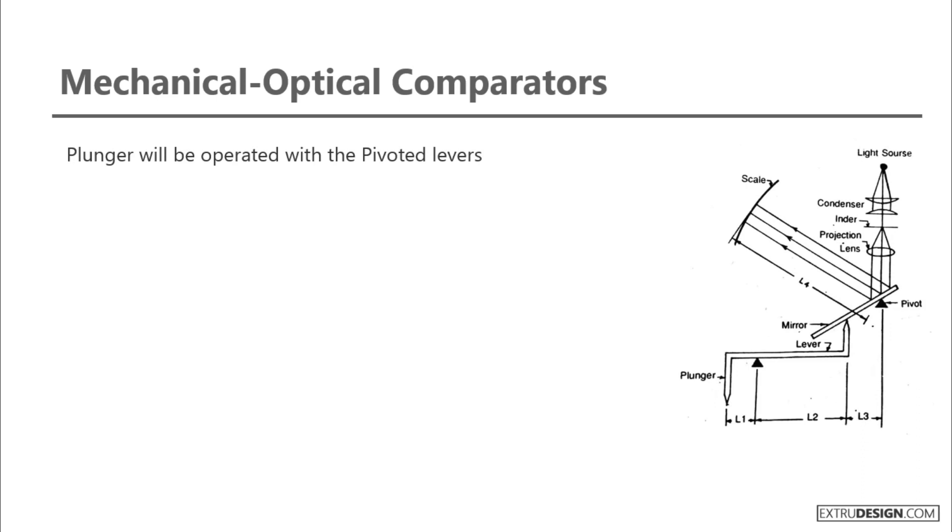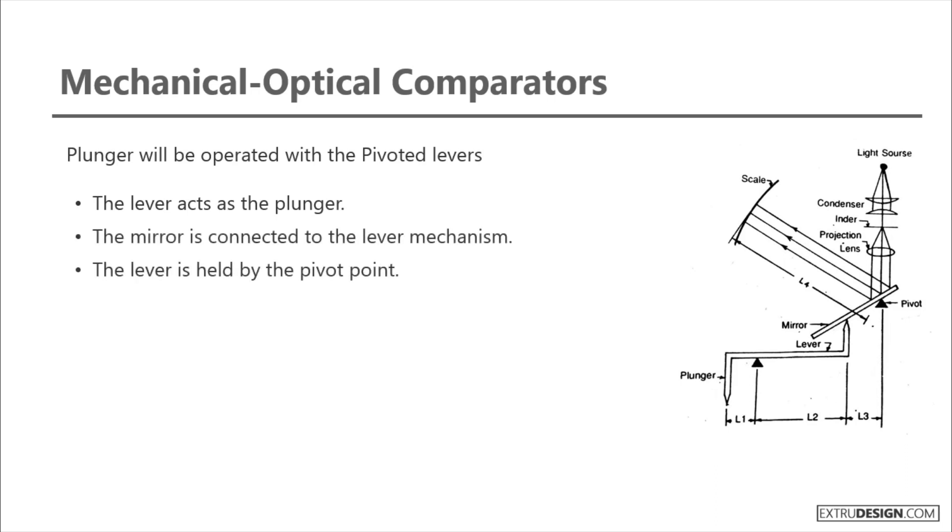Check the schematic diagram of the mechanical optical comparator shown. Let's see how it works. The lever acts as the plunger. The mirror is connected to the lever mechanism. The lever is held by the pivot point.